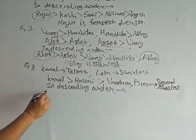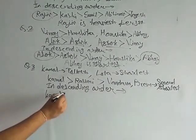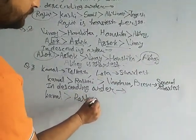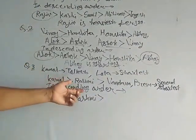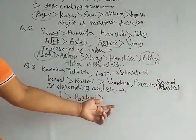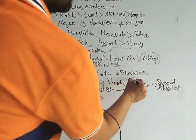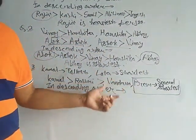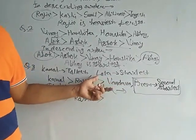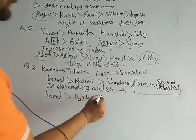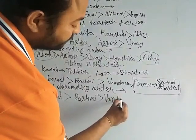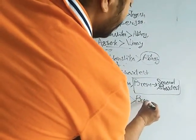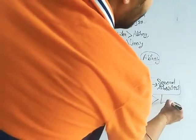Kamal is tallest, so Kamal is here at the top. Then Rasmi is shorter than Kamal, so Rasmi is next. Rasmi is taller than Vandana and Prem, but we cannot immediately identify the order between them. From the next point: Prem is the second shortest person, so Lata is shortest, meaning Vandana is taller than Prem. So Vandana is placed above Prem.